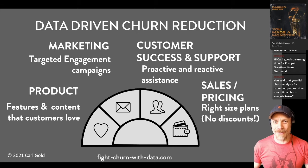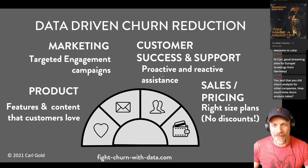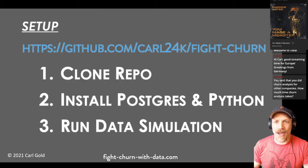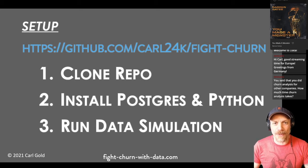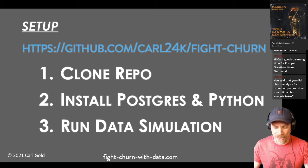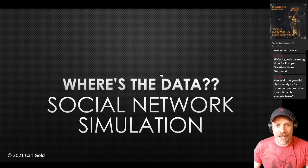A lot of people think fighting churn is about giving out discounts, but it's actually a really bad way to fight churn — in the long run it undermines your pricing. People realize you're giving out discounts when someone says they'll churn, so they just call up and say they're going to churn to get the discount. Anyone old enough remembers doing that with cable and satellite companies. So the data comes from a social network simulation — there's code on GitHub in an open source repo. To follow along you need to clone the repo, use PostgreSQL and Python, and run the simulation to create the data.